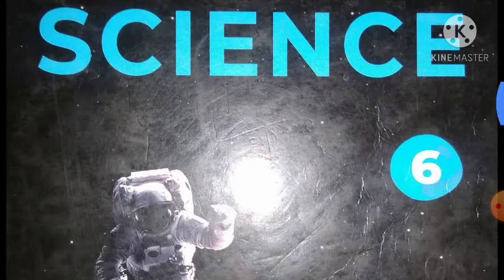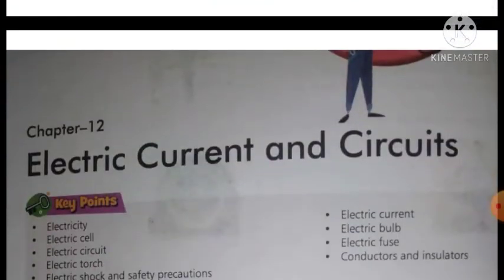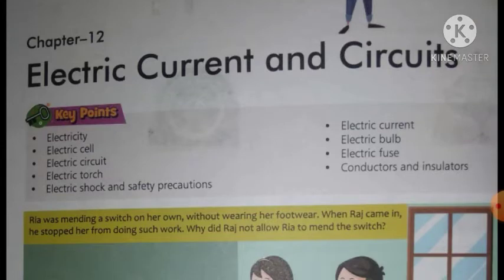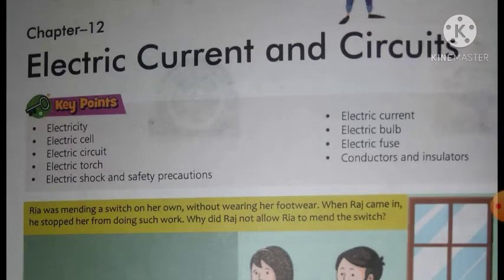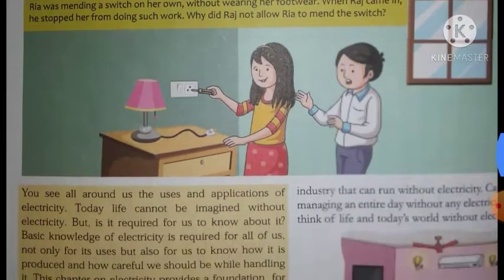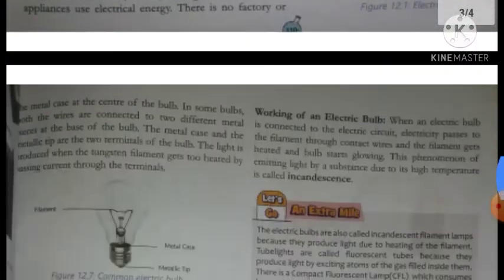We are going to continue our remaining topics of chapter 12, that is electric current and circuits. In this chapter, we have studied what is electricity, what is electric current, what is electric cell, what is electric bulb, and what is the supply of electricity.